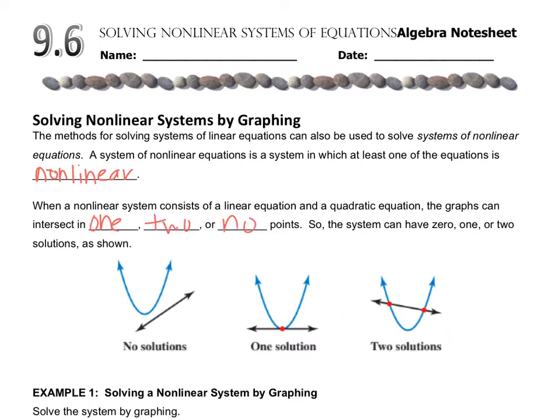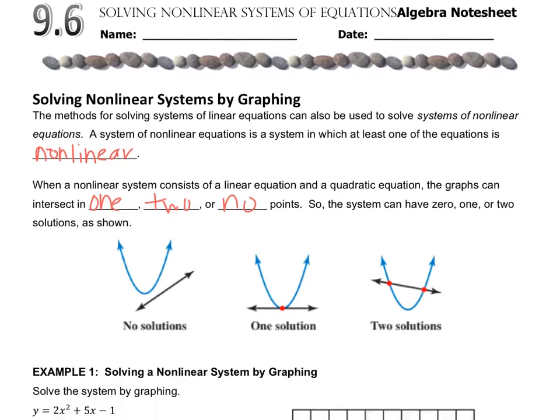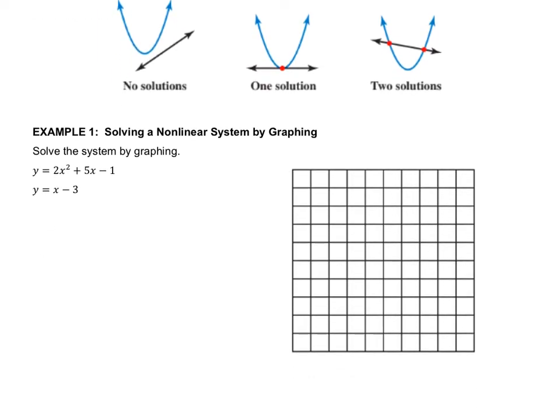So if we remember that solutions is where the intersection points are, there can be one solution, there can be two solutions, or there can be no solution. So we're going to look at how to find those solutions and how to see those solutions using the three techniques: graphing, substitution, and elimination.